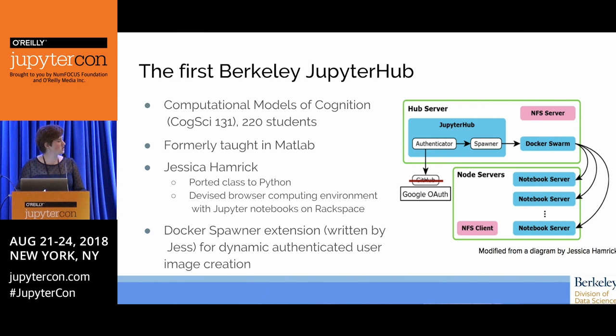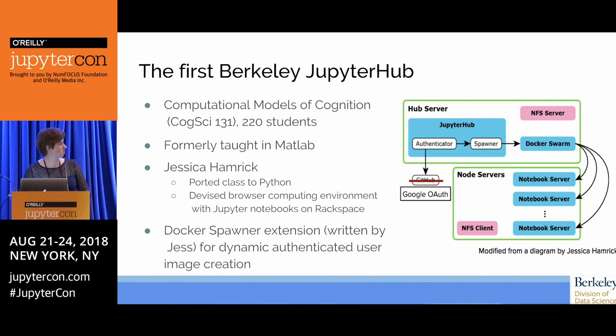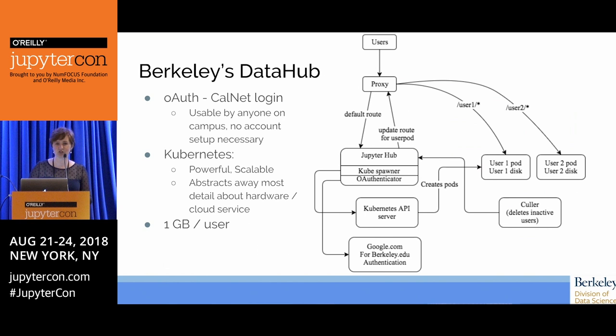With this design goal in mind, the faculty that designed Data 8 were trying to come up with a solution that would enable cloud-based computing, and they stumbled upon the first Berkeley JupyterHub, which was run by an instructor on campus who created essentially a JupyterHub before JupyterHub was really a thing — for her cognitive science course, Computational Models of Cognition. She ported the course over from MATLAB to Python and set up a JupyterHub where students could log in with GitHub authentication and then Google authentication and run Jupyter notebooks for her class. The Data 8 instructors completely duplicated this installation into the first Data 8 DataHub.